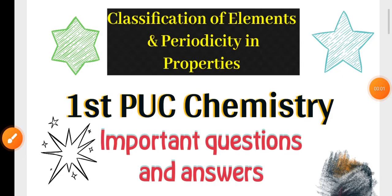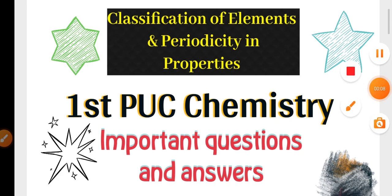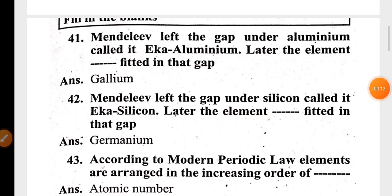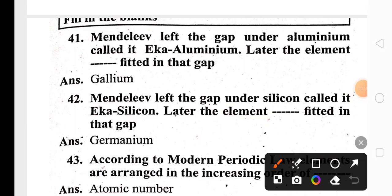Specification of elements and periodicity in properties is the third chapter in first P.U.C. chemistry. We will see some of the important questions and answers for the coming midterm exams and annual exams. These are some of the important one-mark questions they may ask in the exam.